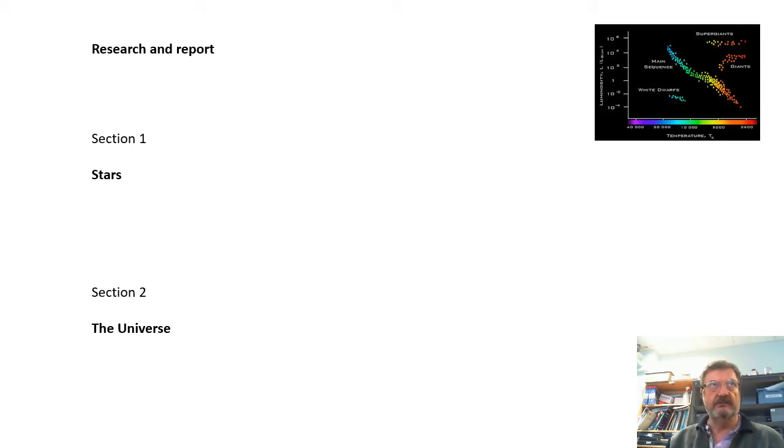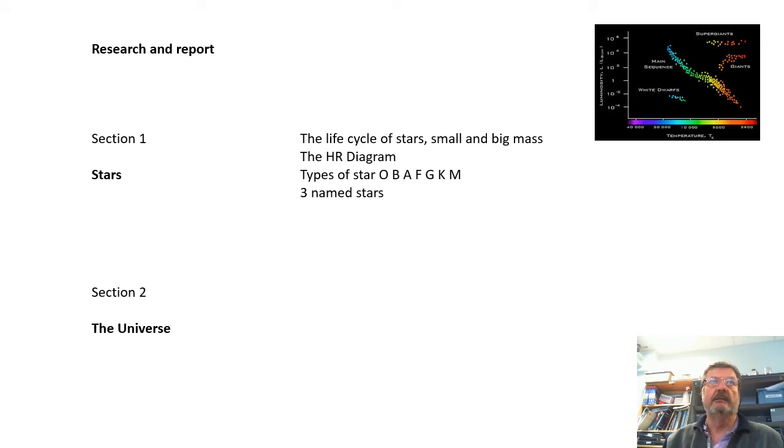Section 1 is about stars, covering the life cycle of stars both small and big mass, the HR diagram, the different types of stars and spectral classes - O, B, A, F, G, K, M (oh be a fine girl kiss me), and then three named stars.